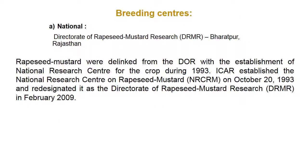Breeding centers for rapeseed and mustard: the national center is NRC and Directorate of Rapeseed and Mustard, located at Bharatpur, Rajasthan. These were de-linked from the Directorate of Oilseed Research with the establishment of the National Research Center for Crop during 1993. ICAR established the National Research Center on Rapeseed and Mustard in 1993 and re-designated it as Directorate of Rapeseed and Mustard in February 2009.